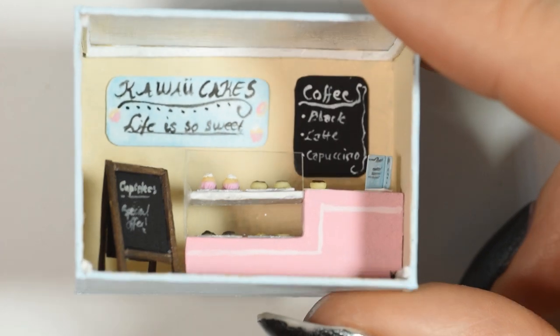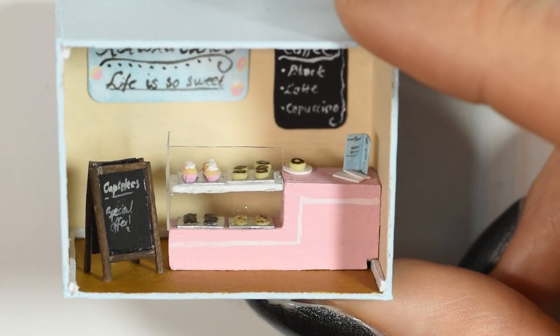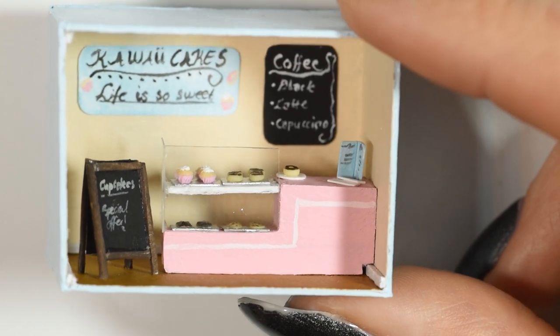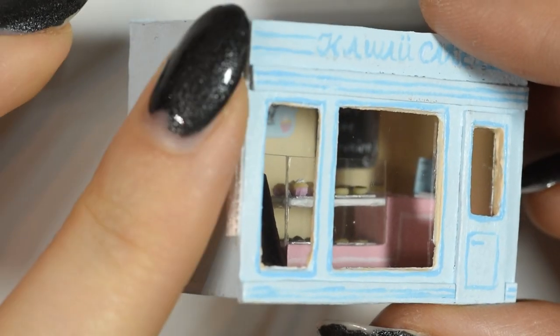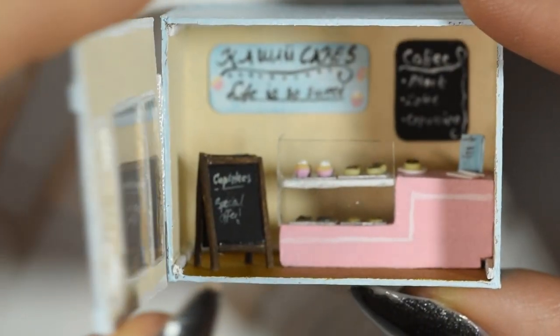Then you're ready to glue everything in place. Finally, I glued on a piece of ribbon to the side as a simple hinge to attach the front. And then we're done.